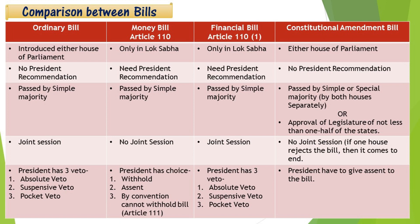Now for an Ordinary Bill, the President has 3 veto powers: absolute, suspensive, and pocket veto. For a Money Bill, the President can withhold or give assent — convention cannot hold without the bill, as given in Article 111. For a Financial Bill, the President also has 3 vetoes: absolute, suspensive, and pocket veto. For a Constitutional Amendment Bill, the President has to give assent to the bill — the President must say yes to this bill.